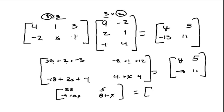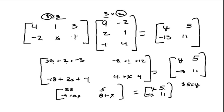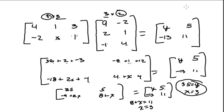That product matrix has to equal [y, 5 / -13, 11]. Matching position by position: 35 equals y, so y equals 35. 5 equals 5 — that checks out. For x, 8 plus x has to equal 11, so x equals 3. That gives us our values: y equals 35 and x equals 3.